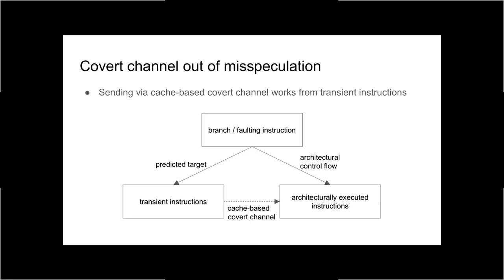If you have either a mispredicted branch or an instruction that faults, the CPU continues executing to the predicted target. You have these transient instructions that run and will be rolled back later, but from inside these transient instructions you can send on a cache-based covert channel. Then when the CPU has rolled back and starts executing architectural control flow, you can do timings to read from the cache-based covert channel and leak data to which you had access in those transient instructions.